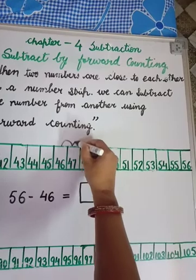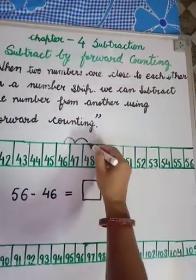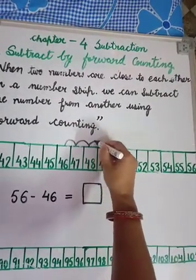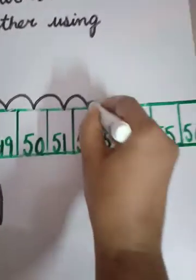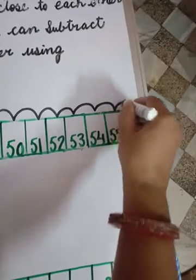46 to 47, we need to reach 56. Okay, 47 to 48, 49, 50, 51, 52, 53, 54, 55, 56.